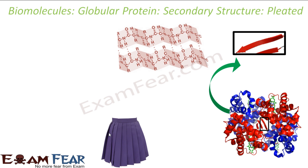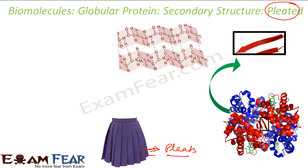The next type is the beta-pleated sheet. The word 'pleated' comes from the pleats on a skirt. In this case, the peptide chains are stretched out to the maximum extension, then laid side by side, held together by intramolecular hydrogen bonding, giving a pleat-like structure. The beta-pleated sheet is not as stable as the alpha helix; the helix is more stable.